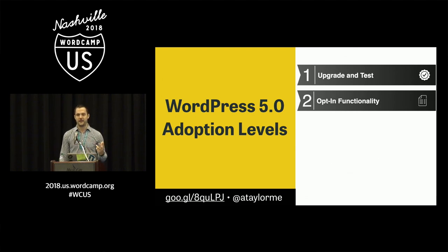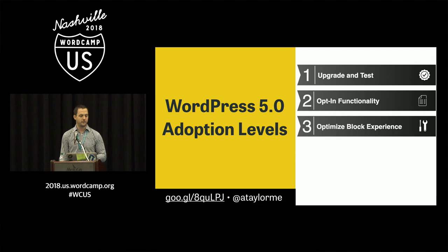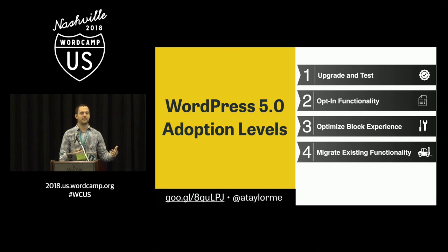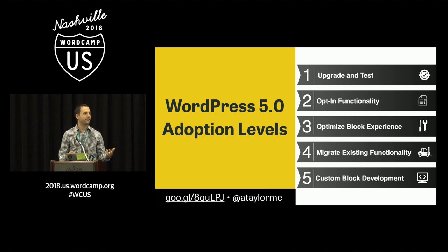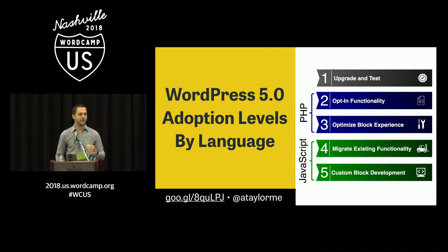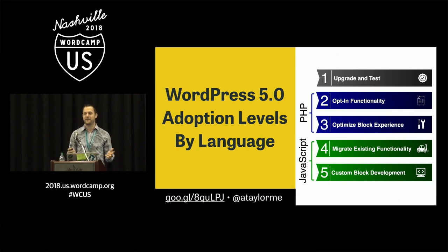Then we have opt-in functionality, which we're going to talk about. There are tons of new things that come out of the box, but some stuff you have to opt into and do a little bit of work for. Then you can optimize the block experience — out of the gate there's a ton of core blocks, but there are things you can do to make that experience better for your clients. Then we can get into migrating shortcodes to blocks and creating custom blocks. As I look at these adoption levels, I really split it by language and realized there's a lot you can do with PHP. I did it backwards — I dove into React and JavaScript and ES6 because I thought it was cool, and then figured out there was a ton I could do before I even had to go down that path.